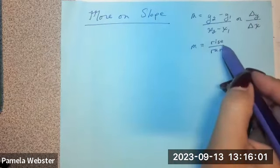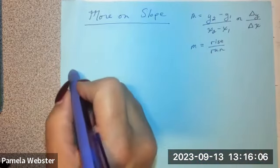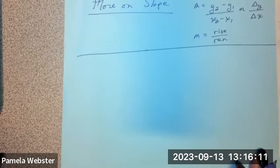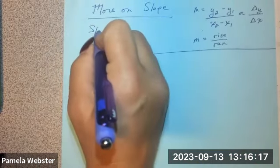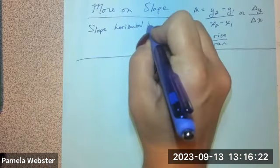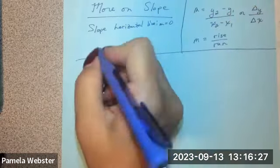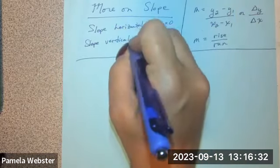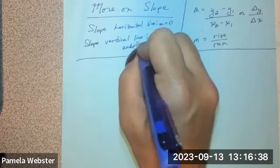Or you might have been told before slope is rise over run, where we use this variable m to represent slope for all of our equation stuff. So rise over run — that's the background on slope. We actually also did slope of a horizontal line, and we found out that m equals zero on those.